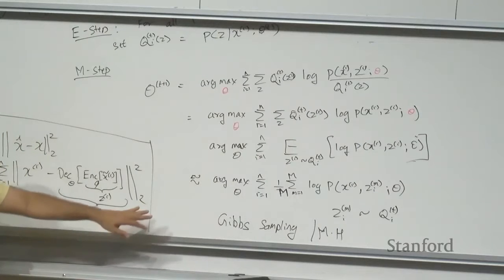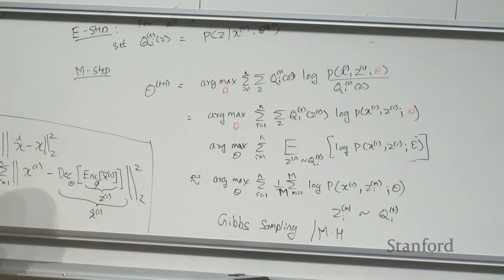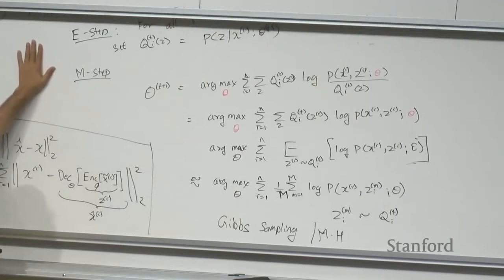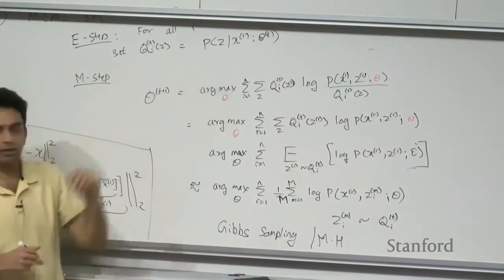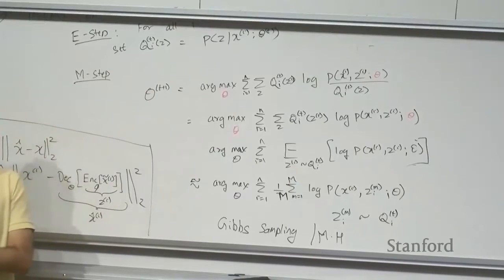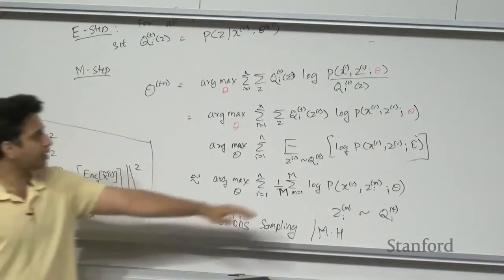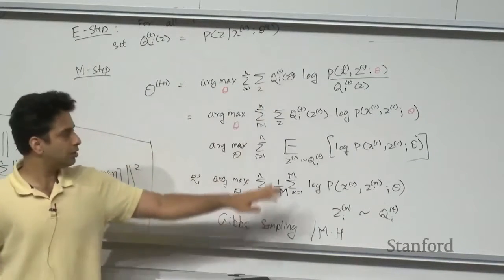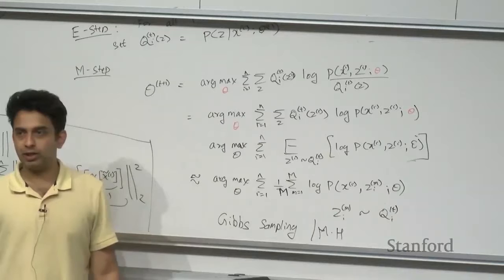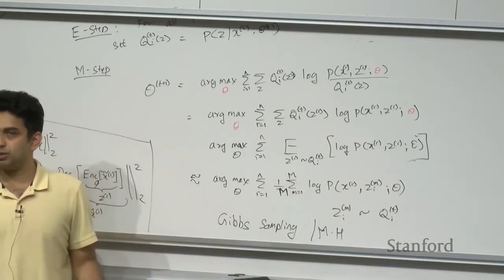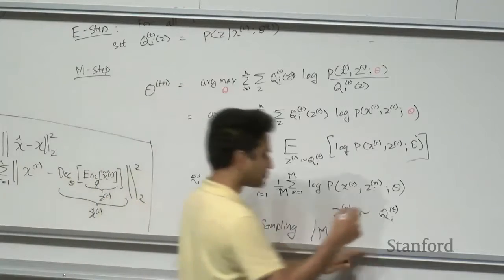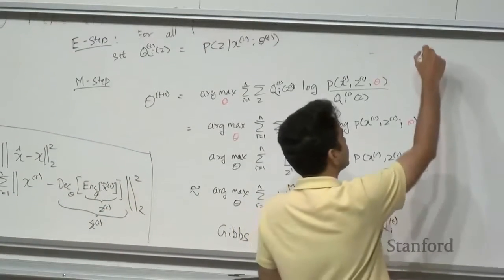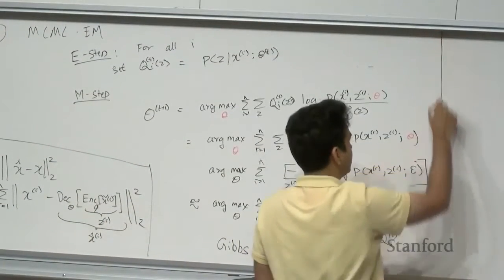There are many MCMC techniques like Gibbs sampling or Metropolis-Hastings to sample from a posterior even when we don't know how to evaluate its density exactly. MCMC is a vast field where you can get samples from posteriors without knowing the closed-form density. However, in this MCMC-EM variant, the convergence guarantee of standard EM no longer holds, since this is an approximation of the lower bound rather than the exact lower bound.